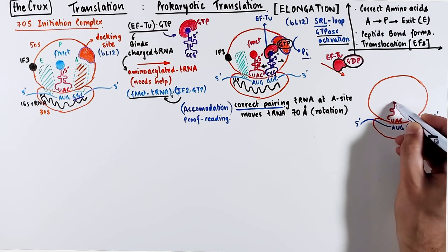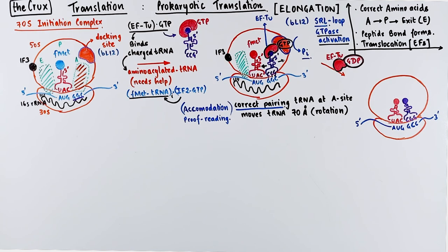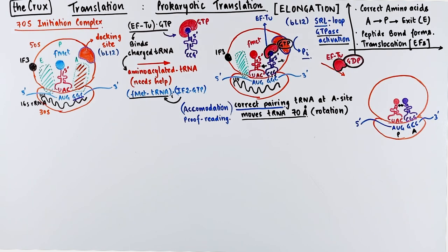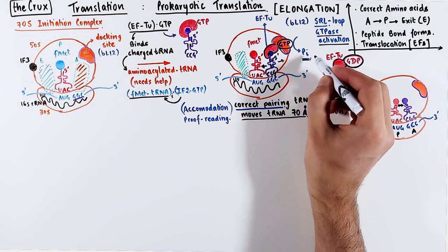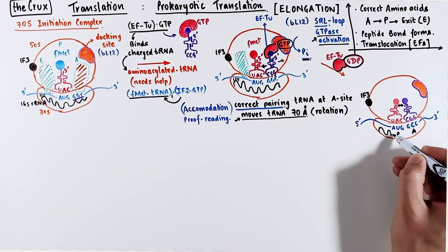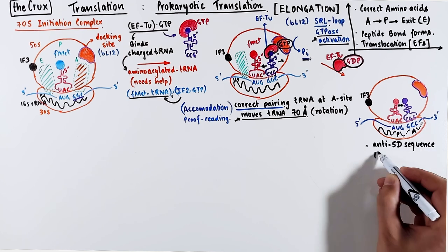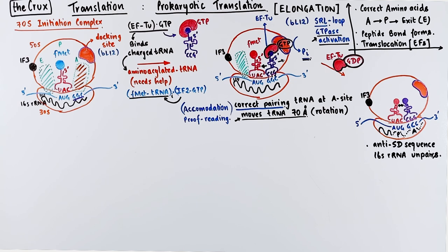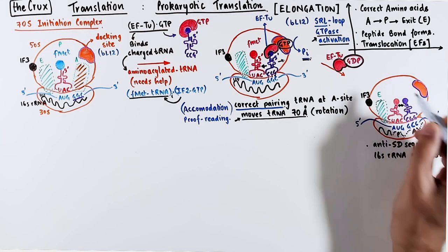In the next state of this complex, the tRNA at the A site is sitting quite close to the P site tRNA due to this accommodation mechanism, and EF-Tu is now released, so the docking region is completely empty. Another thing that happens due to the GTPase activity is that the anti-SD sequence in the 16S ribosomal RNA, which was paired with the mRNA, becomes unpaired — it essentially flips inside the core of the 30S subunit. The E site remains empty.